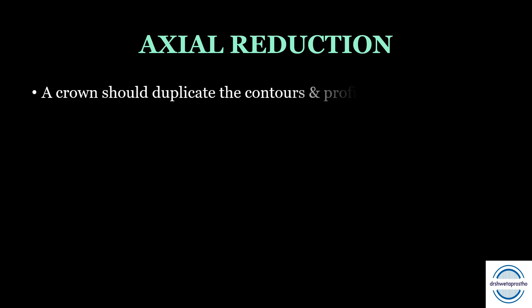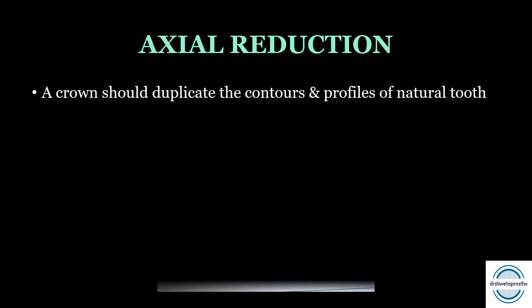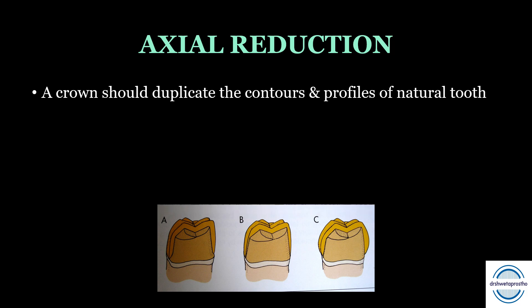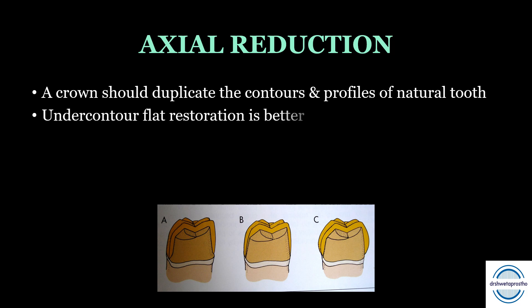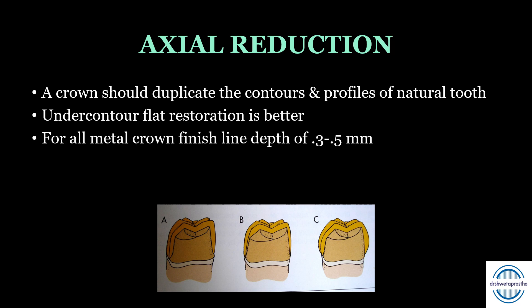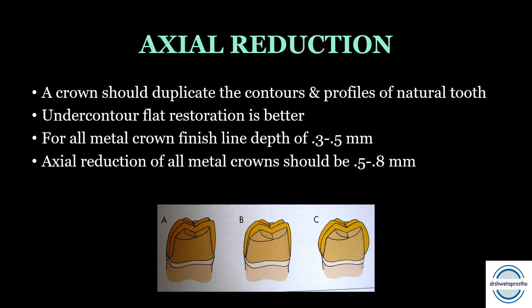Regarding axial reduction in detail: a crown should duplicate the contour and profile of a natural tooth, unless we need to correct a malformed or malpositioned tooth. Always remember: an undercontoured flat restoration is better than an overcontoured restoration, which is very difficult to clean and manage. For all-metal crowns, the finish line depth should be 0.3 to 0.5 mm and the axial reduction should be 0.5 to 0.8 mm.